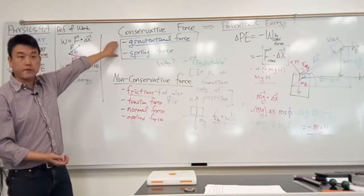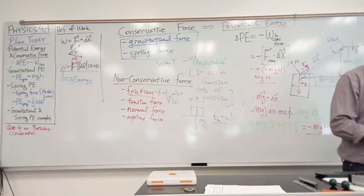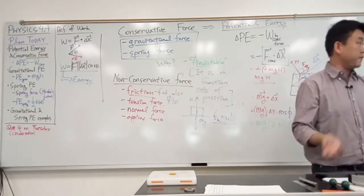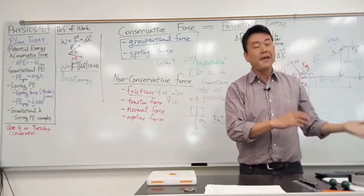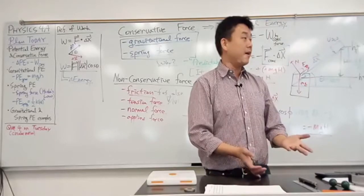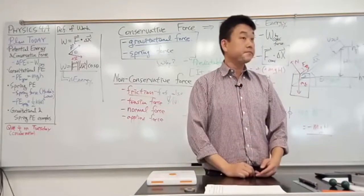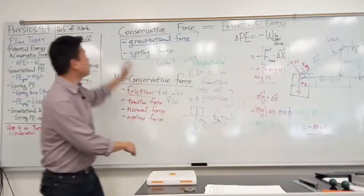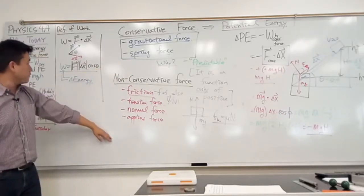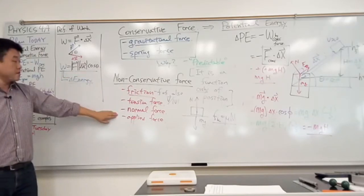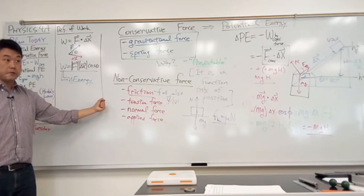These are the only two conservative forces you will see in this class: gravity and spring force. But be on the lookout for more in future physics classes. In Physics 4B, you will see that electric force is conservative, and magnetic force is surprisingly also conservative. At a fundamental level, every single force is a kind of conservative force, which is why total energy is always conserved — you just have to account for all different forms. Any other force you see in this class is not conservative. Ask yourself: is that non-conservative force doing any work? If not, then energy is conserved, and that will be a key tool in problem solving starting next week.